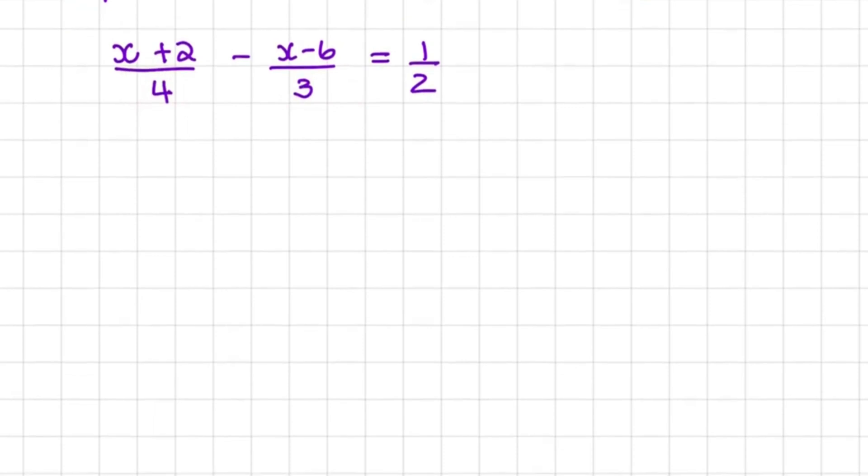Here we have x plus 2 over 4 minus x minus 6 over 3 is equal to a half, and what we want to do is solve the value of x that will satisfy this equation.